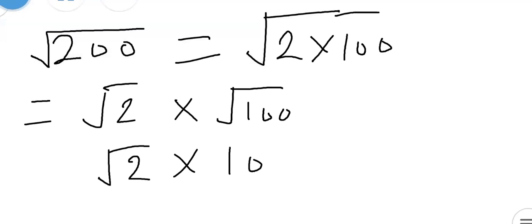So we have 10 multiplied by √2. From the question, we've been given √2 = 1.4142.